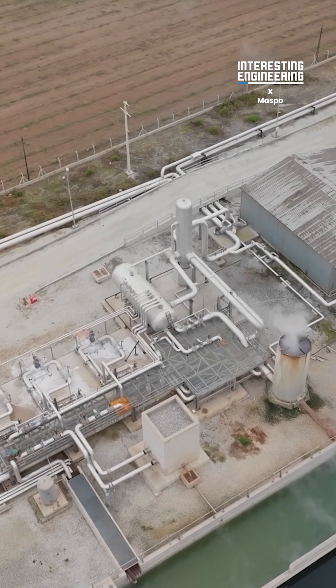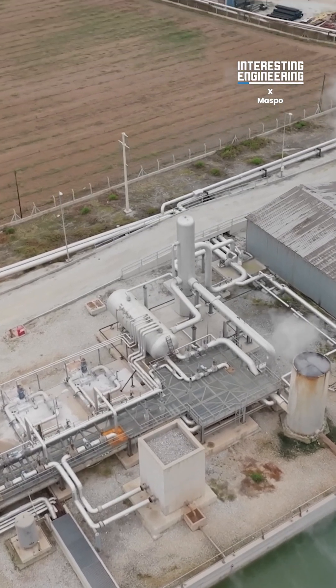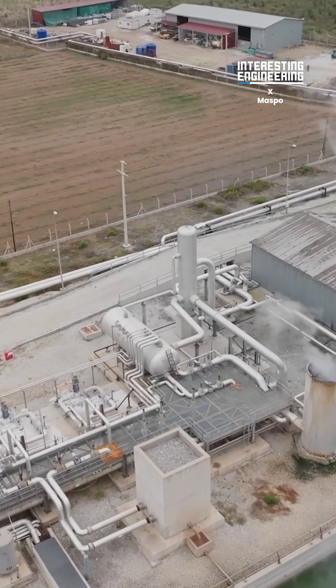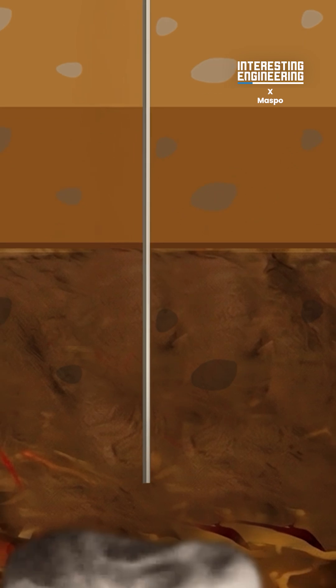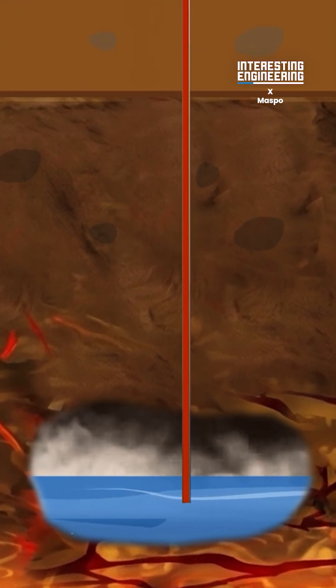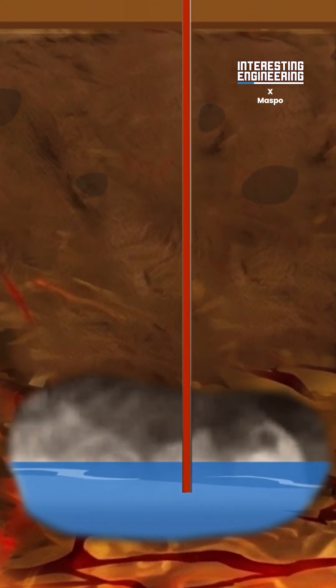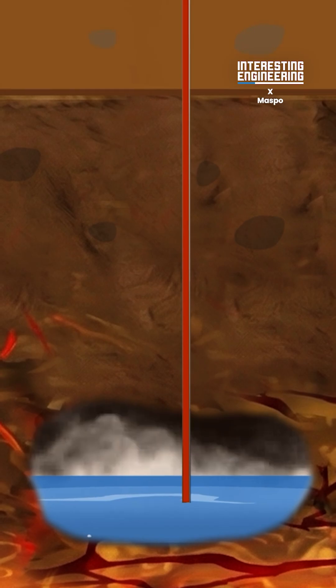First, we need to understand what geothermal energy is and how the energy is harnessed. Geothermal energy uses superheated fluids from below the Earth to generate electricity. Underneath the Earth's surface are reservoirs of water, superheated by the magma even further below it.